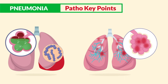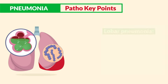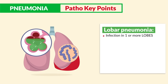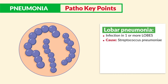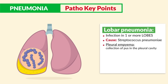Now for key terms you must know for pathophysiology: the main types of pneumonia. First is lobar pneumonia — an infection of one or more lobes of the lung, caused by Streptococcus pneumoniae bacteria. A big complication is pleural empyema — a collection of pus in the pleural cavity where bacteria migrates and creates a fluid-filled lung. It's one of the various kinds of pleural effusion, which we call pleural effluid.